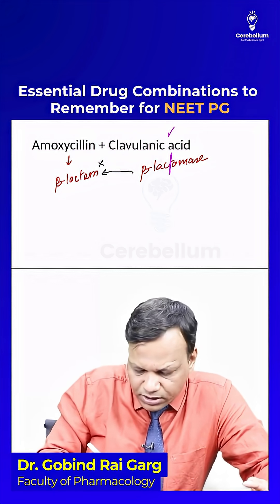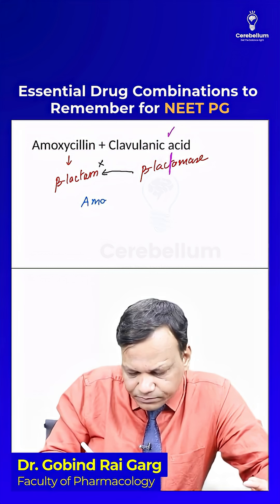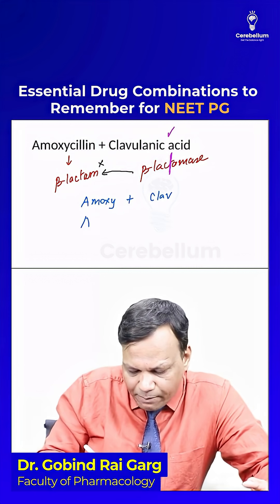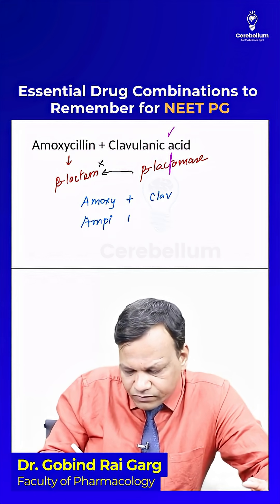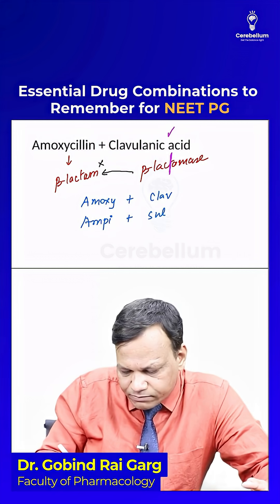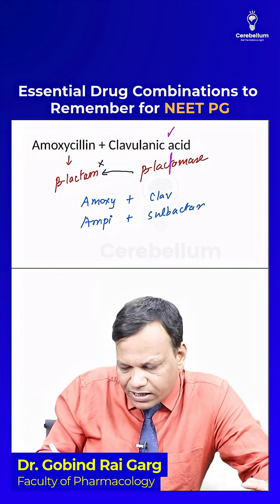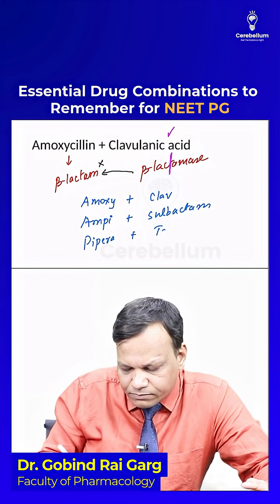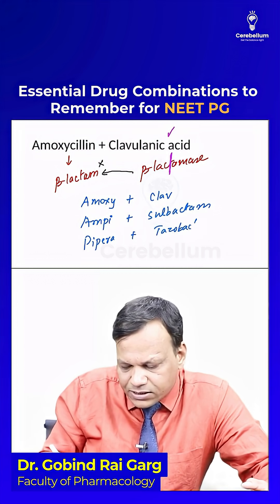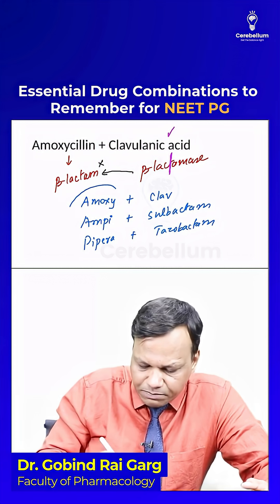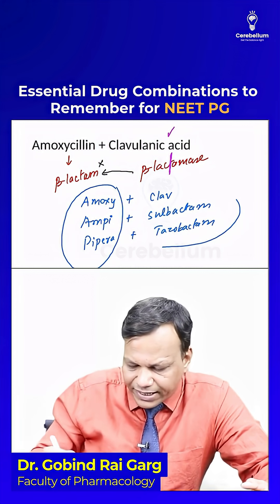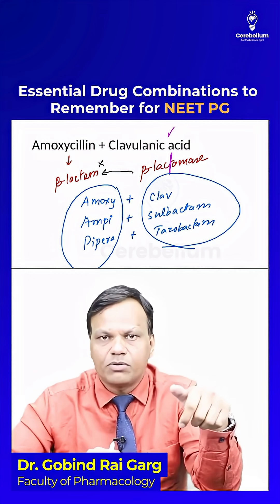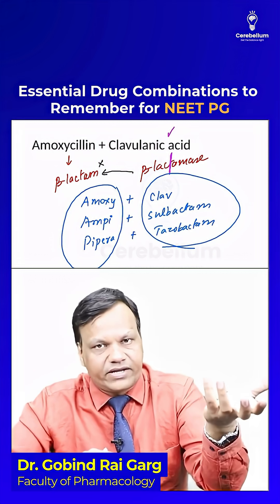The beta-lactam and beta-lactamase inhibitor combinations we use include: amoxicillin with clavulanic acid, ampicillin with sulbactam, and piperacillin with tazobactam. In these combinations, the beta-lactams cannot be broken down by beta-lactamase, so they become effective.